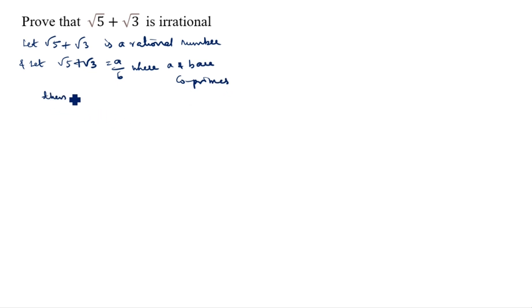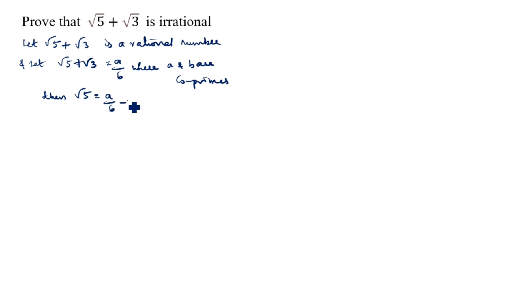Then root 5 is equal to a by b minus root 3, by moving root 3 to the other side.